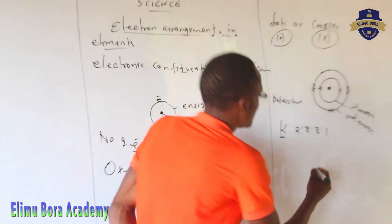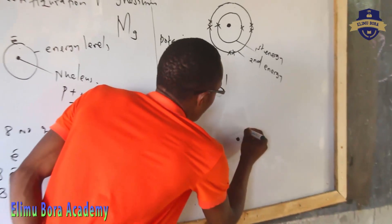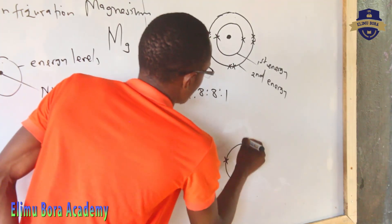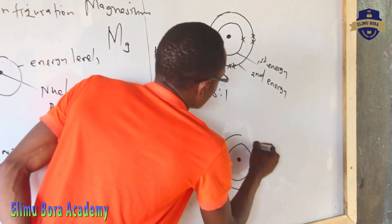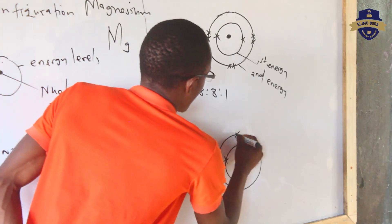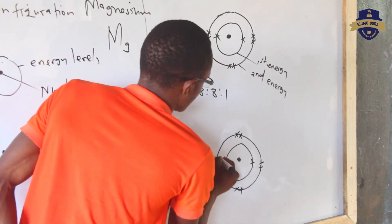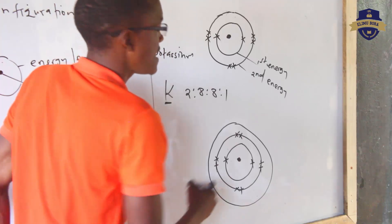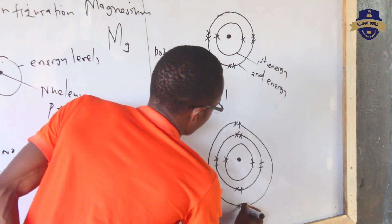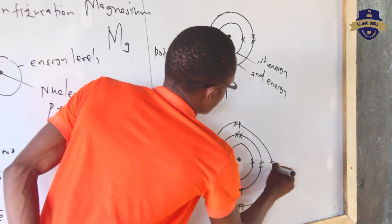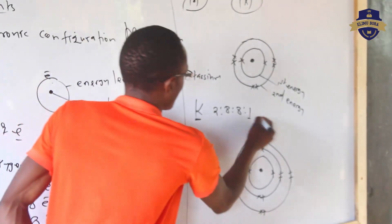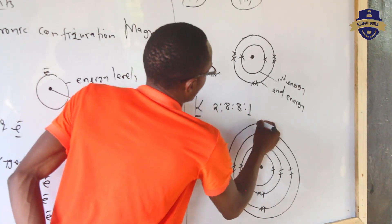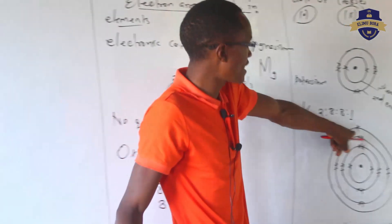To represent potassium, start with the nucleus. Draw the first energy level with a maximum of two — one, two. Go to the next: maximum of eight — one, two, three, four, five, six, seven, eight. Next: maximum of eight — one, two, three, four, five, six, seven, eight. And there is one remaining, so the fourth energy level carries only one electron.